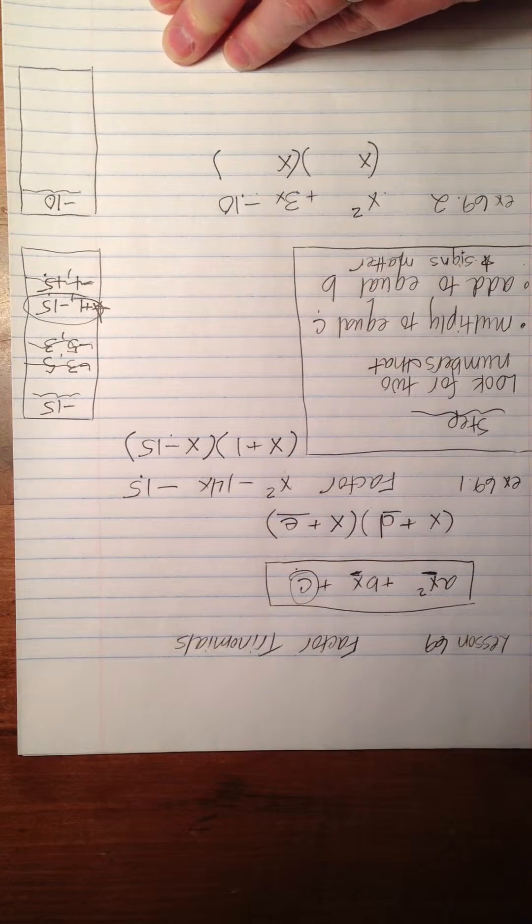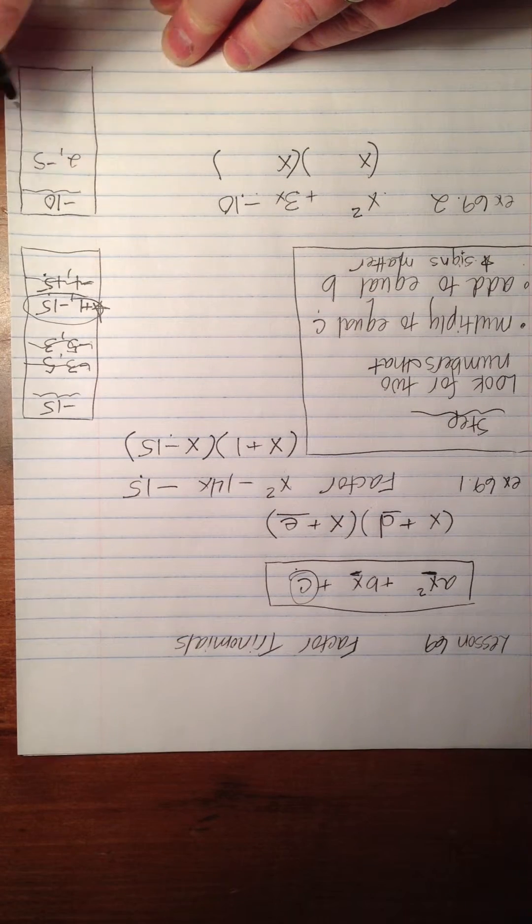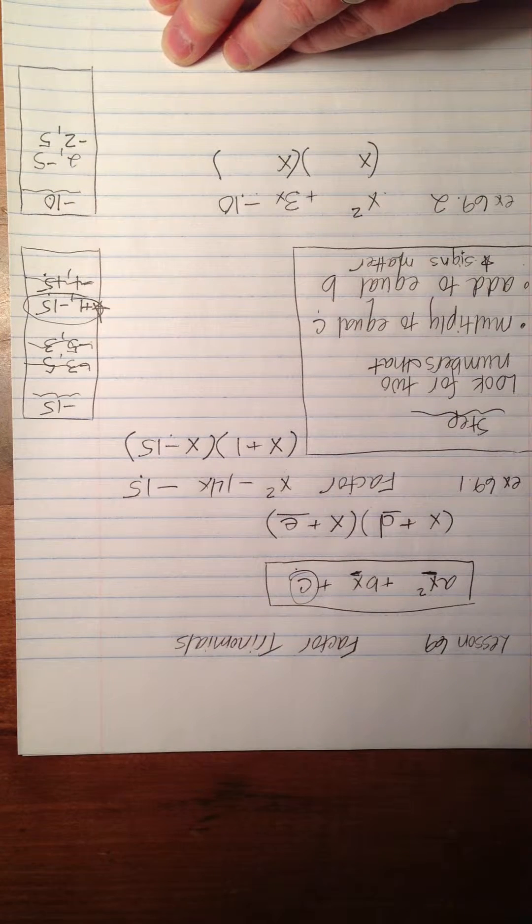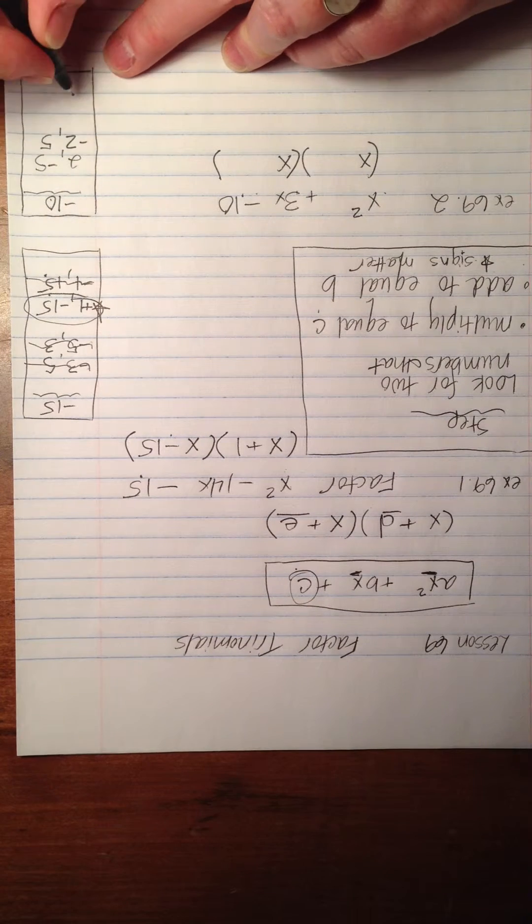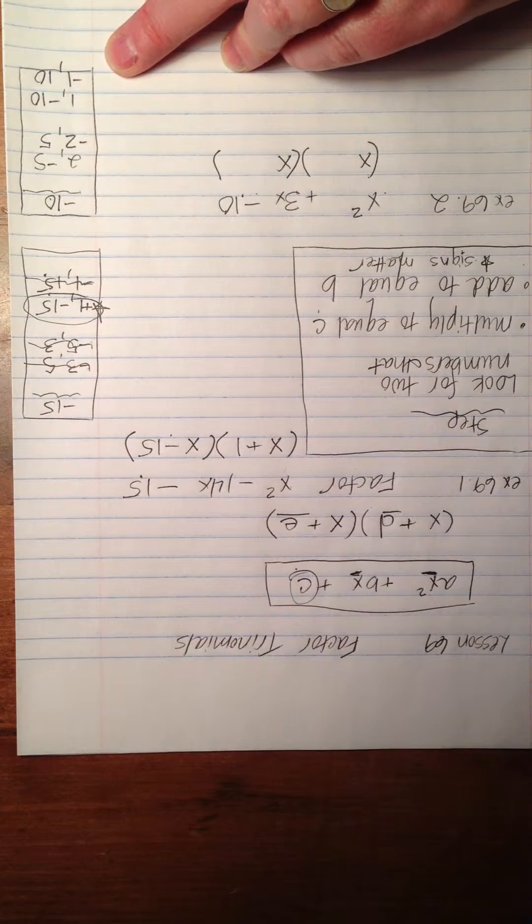Write down the number, make sure you include the sign that you have to multiply to, and then write down all the pairs you can think of. When I think of 10, I think of 2 times 5. But in order for it to be -10, one of them is going to have to be negative. Or the other. And then the only other pair I can think of is 1 and -10, or -1 and 10.